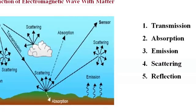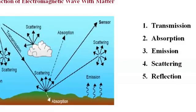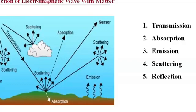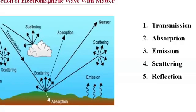The interaction of electromagnetic radiation with matter usually consists of five modes: transmission, absorption, emission, scattering, and reflection.